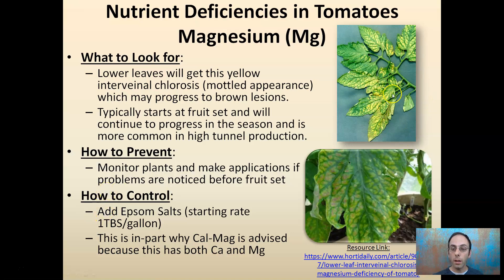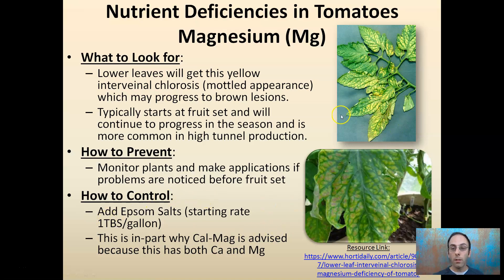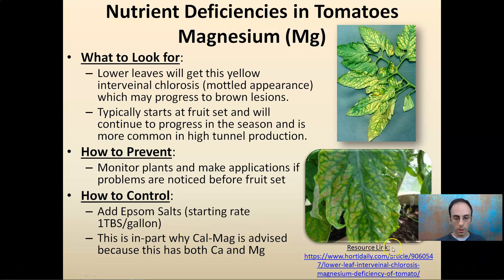Continuing on to magnesium deficiency, again in tomatoes, those lower leaves will start to get a yellow appearance. This interveinal chlorosis is what you're looking for. It typically starts at fruit set, and you want to monitor your plants. The fix can be quite easy — Epsom salts starting at a rate of one tablespoon per gallon, which can be applied to the leaves and also as a soil drench. Also, if you're using a CalMag product, that can be advised if you're getting calcium-driven blossom end rot in tomatoes. A resource link is also provided.